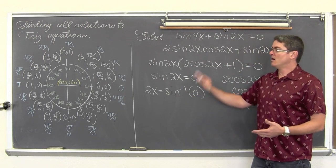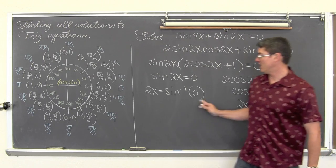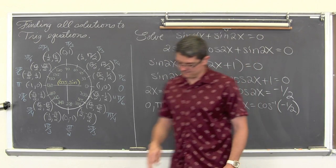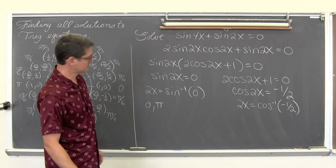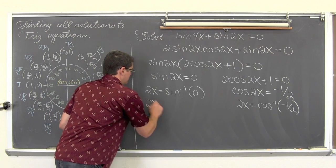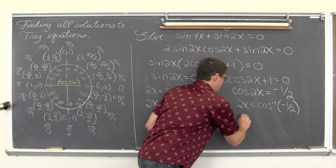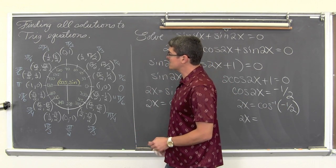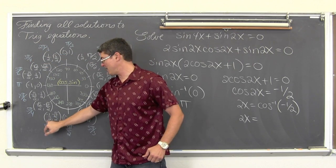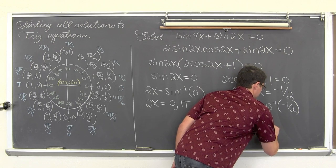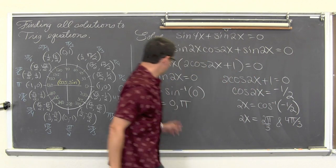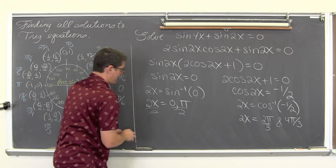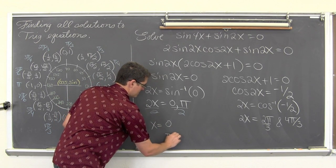Inverse sine of 0: where on the unit circle is the sine value equal to 0? Where y is 0, at 0 and pi. So 2x equals 0 and pi. And we have 2x equal to inverse cosine of negative 1 half — where are the x values equal to negative 1 half? At 2pi over 3 and 4pi over 3. We are solving for x, so we divide everything by 2. Dividing both sides by 2, we have x is equal to 0 and pi over 2.